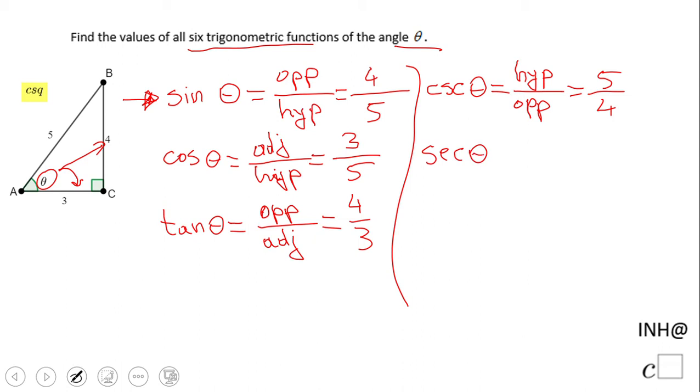The next one is secant. Secant is the reciprocal of cosine, so it would be hypotenuse over adjacent. In this case, 5 over 3. And the last one is cotangent, which is the reciprocal of tangent.